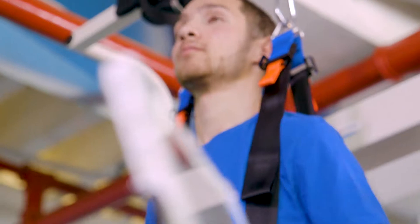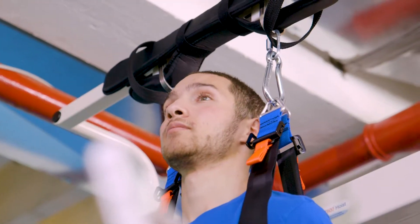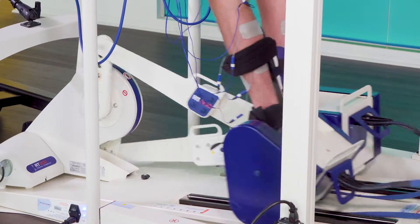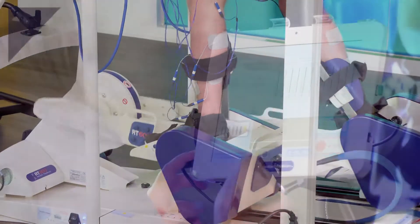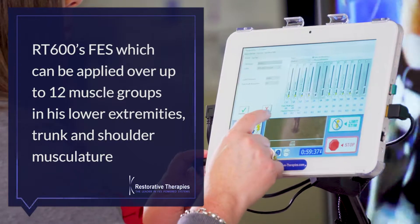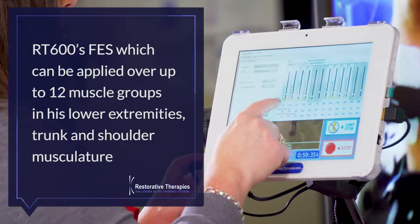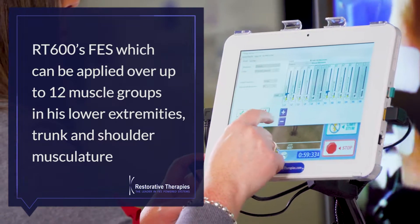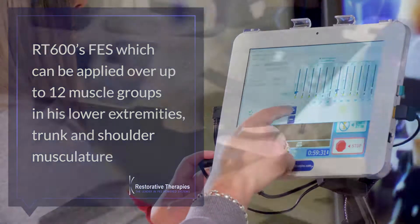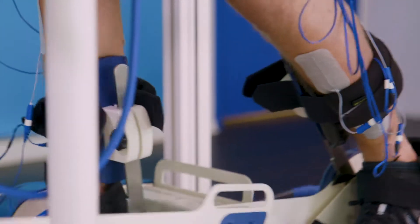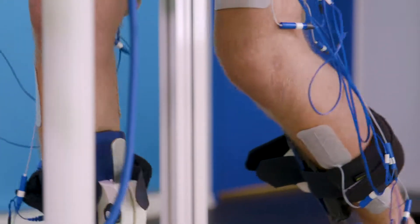The goal of RT600 therapy is for Parker to step using his own muscles while bearing his own body weight. Parker's ability to step and bear his weight is facilitated or enhanced by the RT600's FES, which can be applied over up to 12 muscle groups in his lower extremities, trunk, and shoulder musculature. The FES is timed appropriately with the stepping motion, providing muscle activation and sensory cueing in a walking pattern.